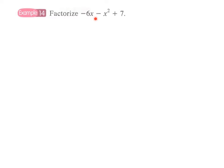Okay, next, factorize -6x - x² + 7. We can see that this expression is not arranged in the format of x² + bx + c, and so in order to use the cross method...